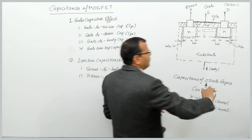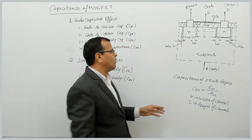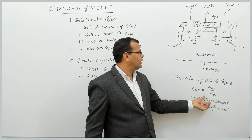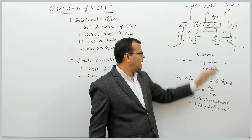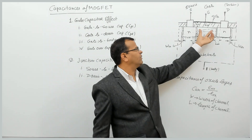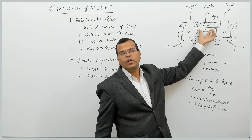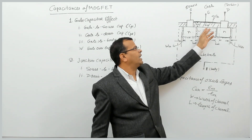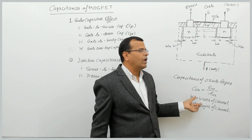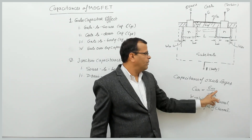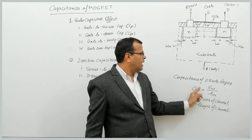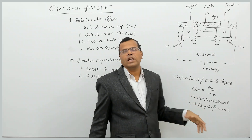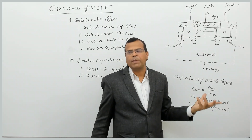The total area of contact between the oxide and the channel is W × L, where W is the width of the channel and L is the length of the channel. If you multiply the oxide layer capacitance per unit area by W × L, that gives you the total capacitance in farads.